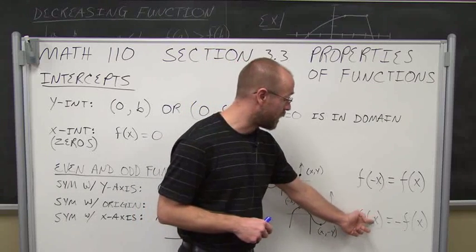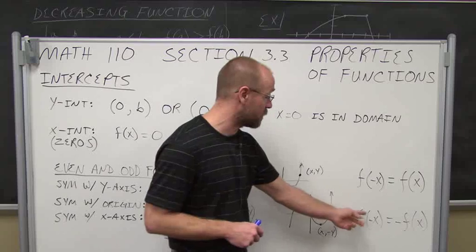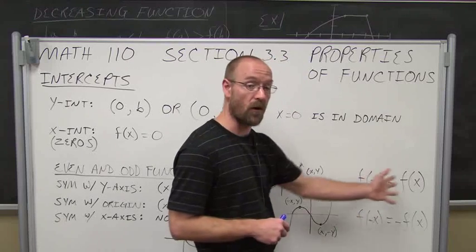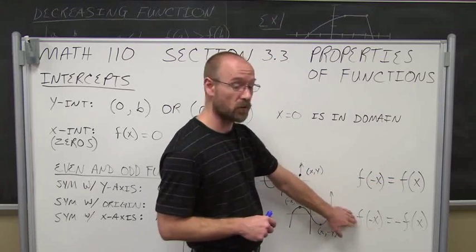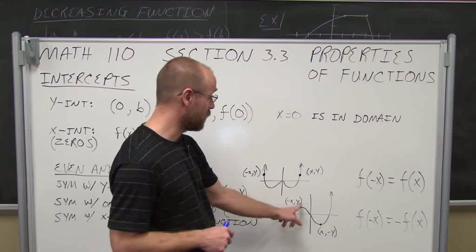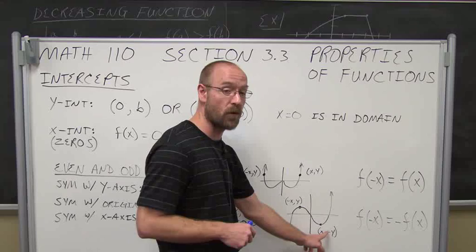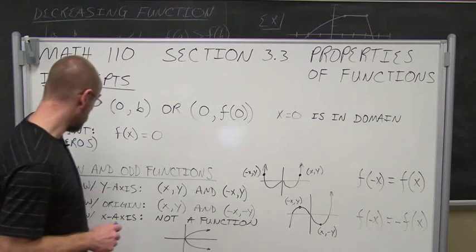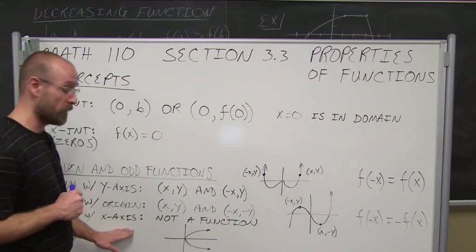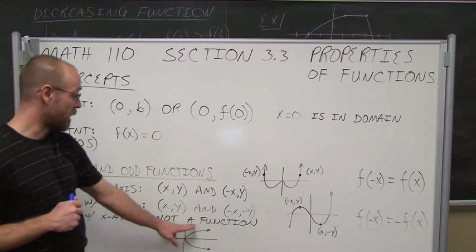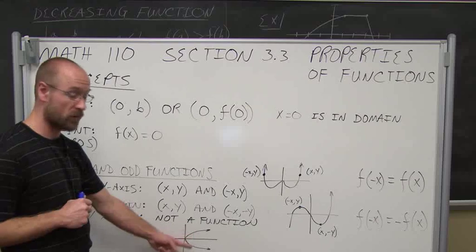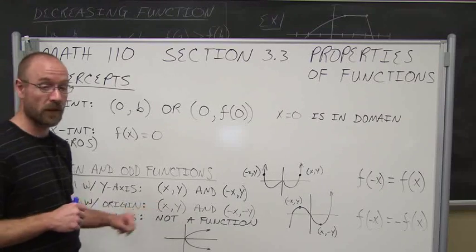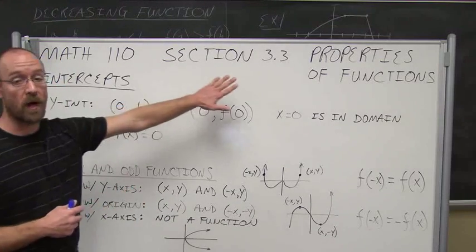In this example, f of negative x equals negative f of x. That means if we put in a negative value of x, it changes the entire function to a negative — it changes the sign of all the terms. That tells me it's symmetric with the origin: a value in the second quadrant corresponds to a value in the fourth quadrant with the same magnitude but different sign. Symmetry with the x-axis, as discussed in 2.2, would not pass the vertical line test, so it's not a function — we won't worry about that when looking at properties of functions.